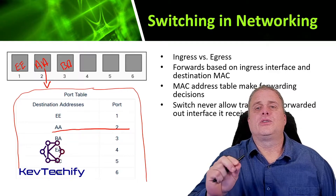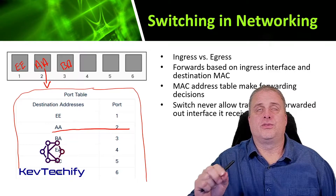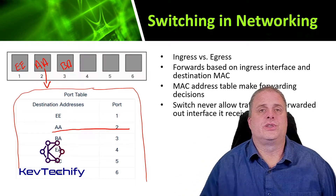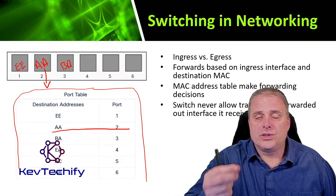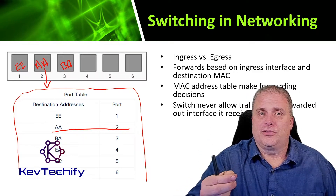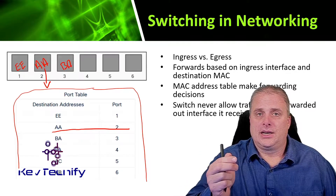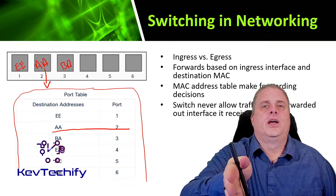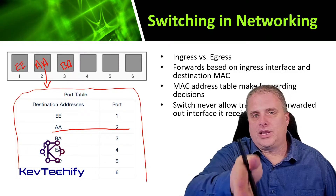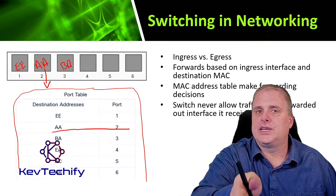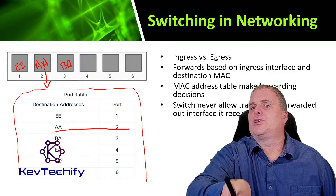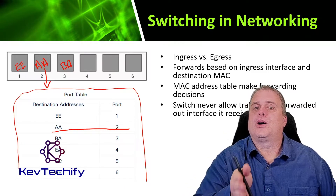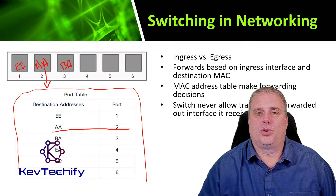Switches will never allow traffic to be forwarded out the interface it was received on. If a switch receives information coming in on a port, it's going to assume that it came into that port for a reason — it shouldn't have to go back out that port. It will never forward it back out that same port.